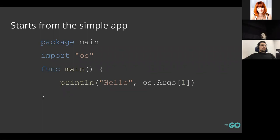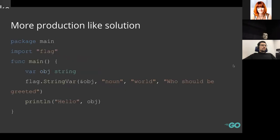The next step is to use the `flag` package from the standard library. This package provides richer information about parameters — we may set the type, define the key, and provide descriptions that will be shown when we launch the application with `--help`. My question to you is: what is missing in this code snippet?